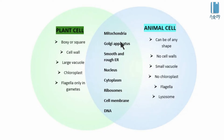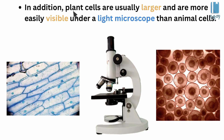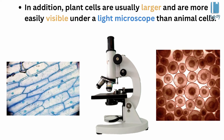Plant cells are usually larger and are more easily visible under a light microscope than animal cells. Animal cells are also visible in the light microscope, and can be observed more clearly under an electron microscope in laboratory activities.